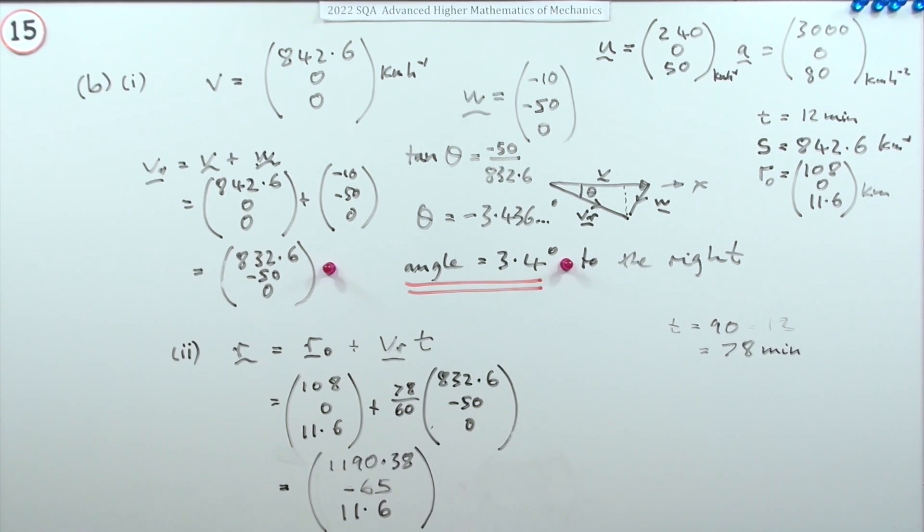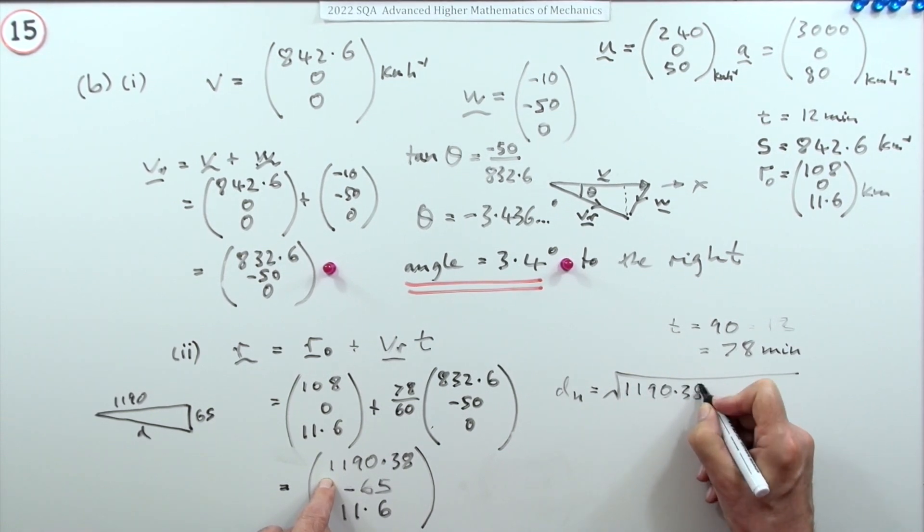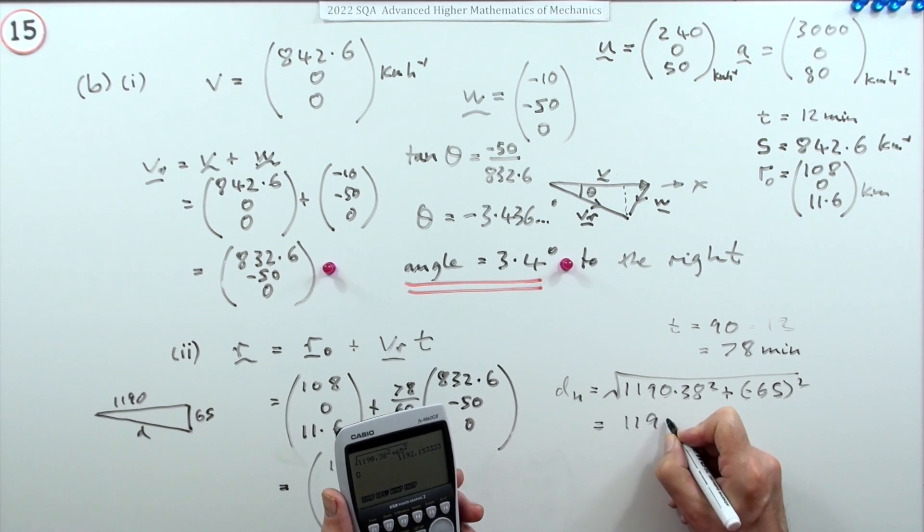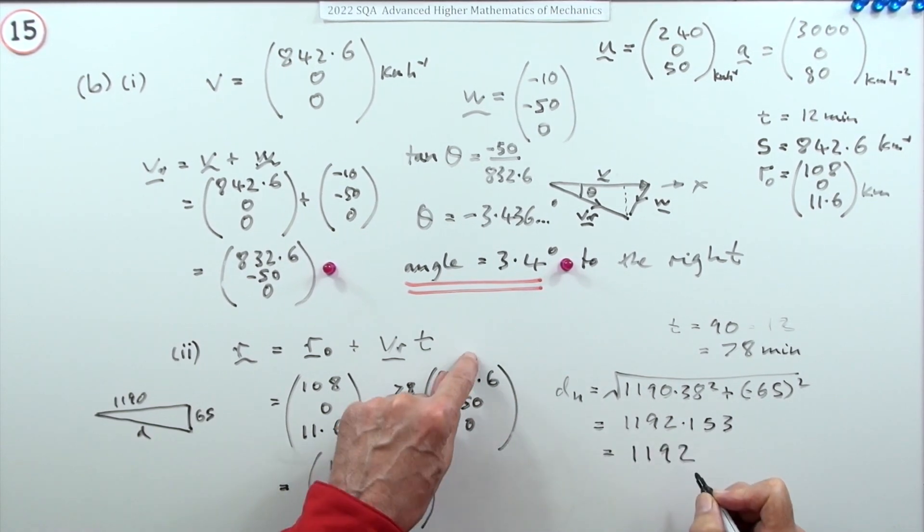What it's asking for is the horizontal displacement. It's going along for 1190, it's come in this way for the 65. The horizontal displacement from start to finish is the distance I want - the straight line distance. So that horizontal distance will be the square root of the x component squared and the y component squared. Popping that in gives me 1192.153. I'm going to round that to 1192 kilometers.